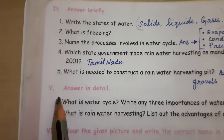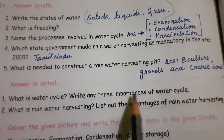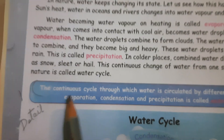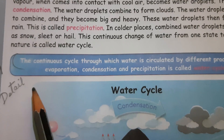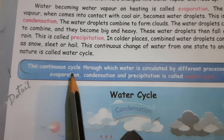Next we have detailed answers. First one: What is water cycle? Write any three importance of water cycle. The definition: The continuous cycle through which water is circulated by different processes like evaporation, condensation and precipitation is called water cycle.